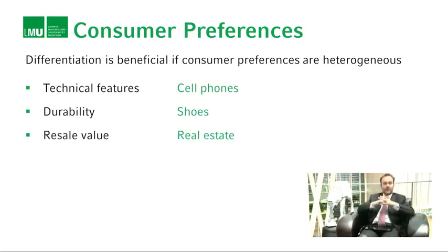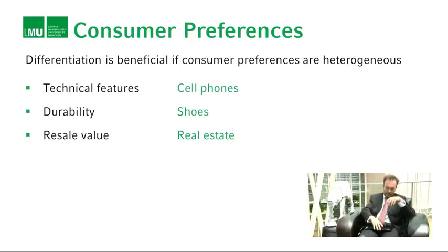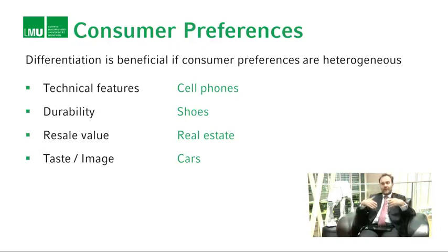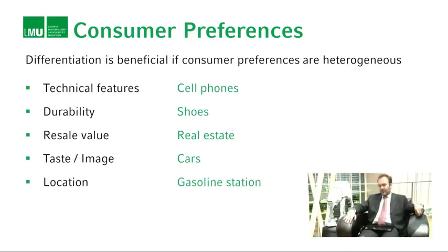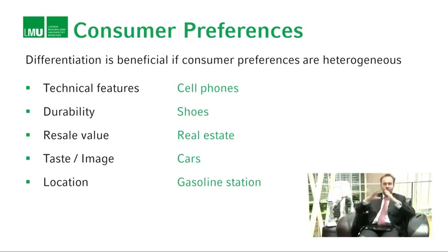Resale value differs. For example, if you look at flats or houses, the resale value is going to be very different for some houses or flats than for others. Taste or image: cars are very highly branded products, and if you buy a car, you buy into a certain brand, a certain image, and that's going to be important. By location — if there's a gas station right on your way home from work, you're much more likely to choose that one than one on a parallel street, simply because it's more convenient. So location is another way by which products, or services, can be differentiated.